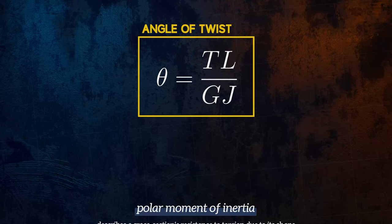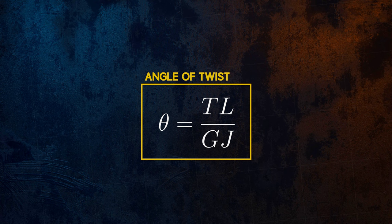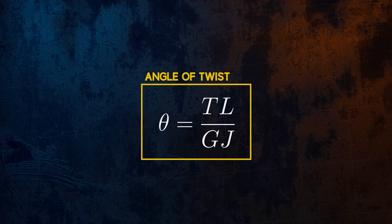One neat thing about the equation for the angle of twist is that it gives us a way to determine a material's shear modulus G experimentally. If we apply a known torque to a bar of known length and cross section, and measure the resulting angle of twist, we can use that information to calculate the material's shear modulus G.